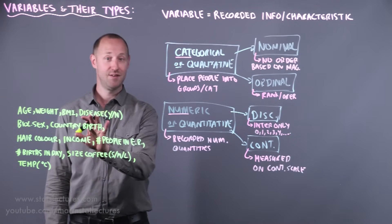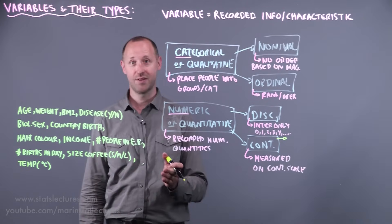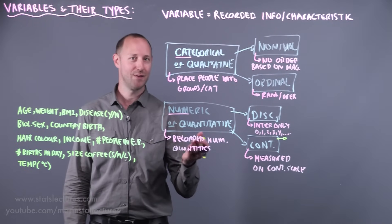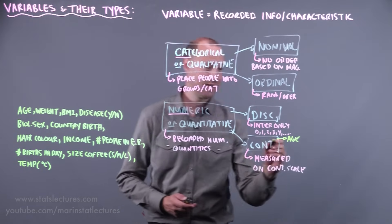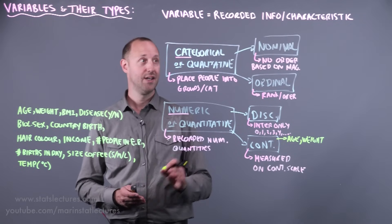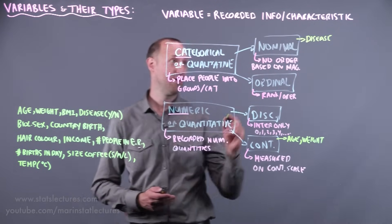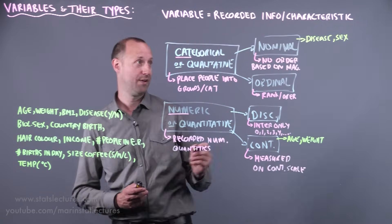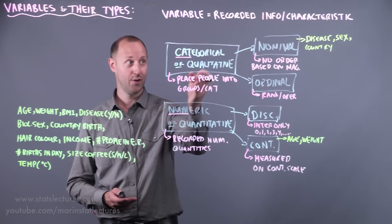Let's go through and classify our example variables. Age is a numeric, continuous variable — while we report age to the nearest whole number, no one says they're 35.738 years old, but it is measured on a continuous scale. Weight is also numeric and continuous. Disease recorded as yes or no is categorical — it places someone into categories with no ordering or rank, so it's nominal. Biological sex recorded as male or female is also a nominal categorical variable.